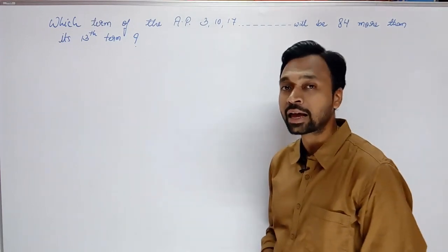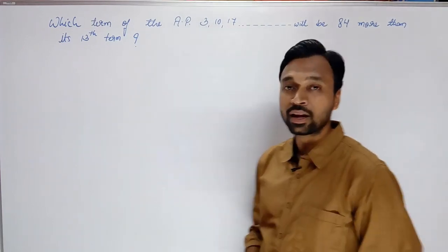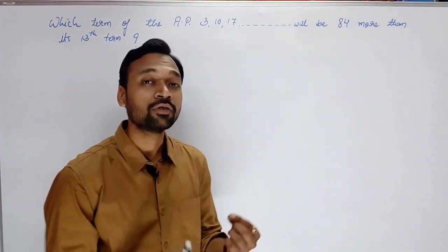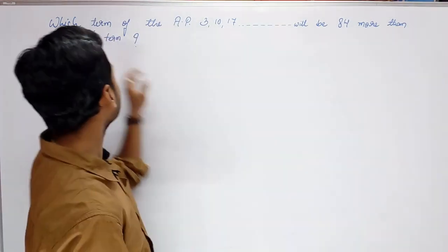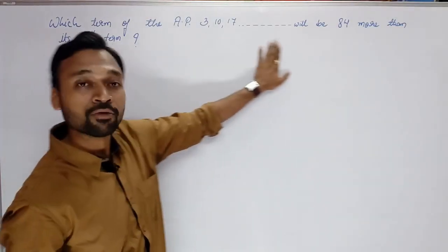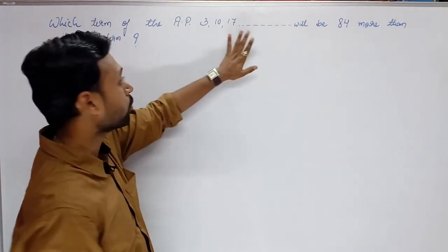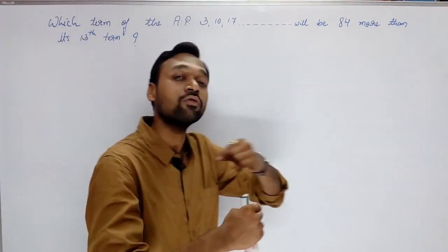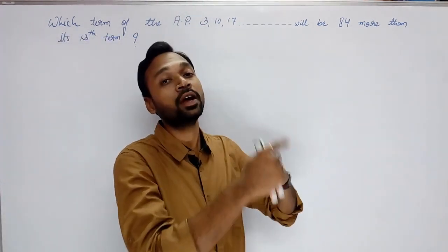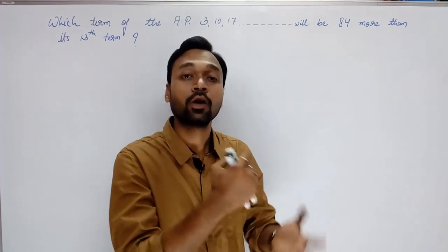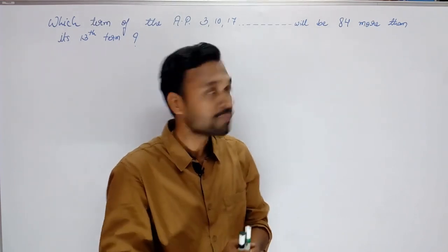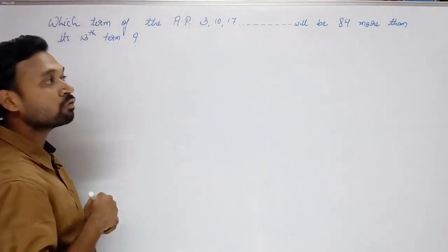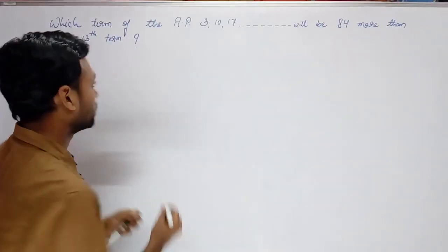Question kya keh raha hai — yahan ek AP di rakhi hai aur is AP ki koi ek term hai jo 84 more than the 13th term hai. Yeh ek increasing AP di rakhi hai, iski 13th term bhi hogi, aur question ne puchha hai ki us 13th term se 84 more wali kaunsi term hai. So let's see how we will solve this question.